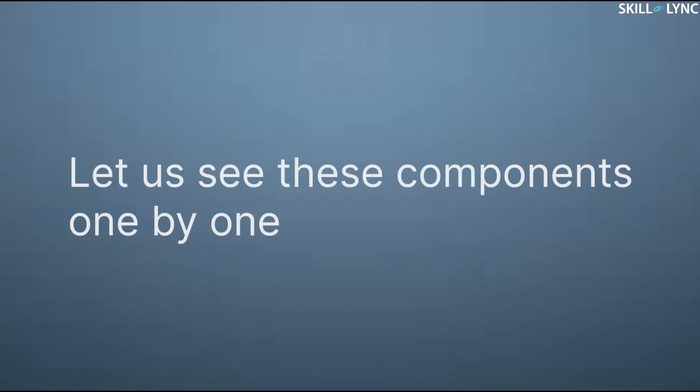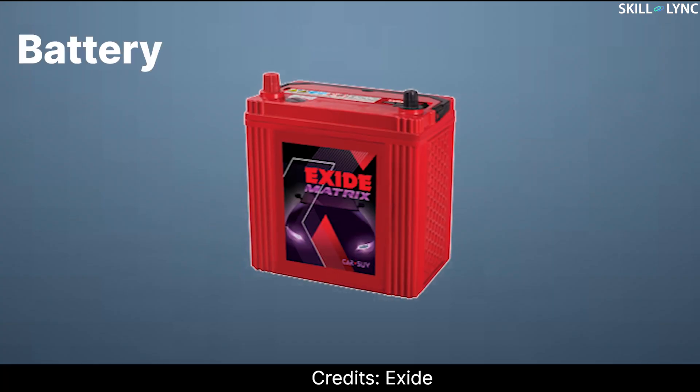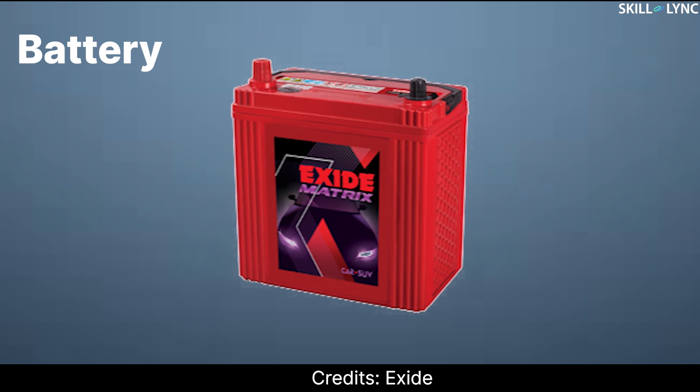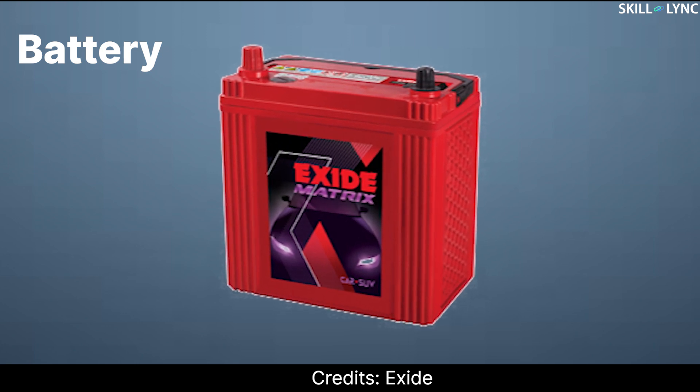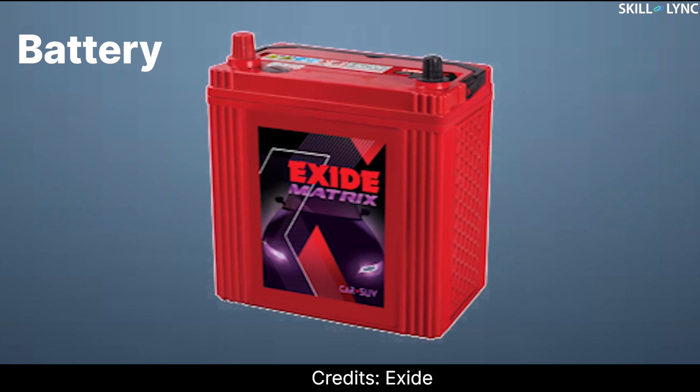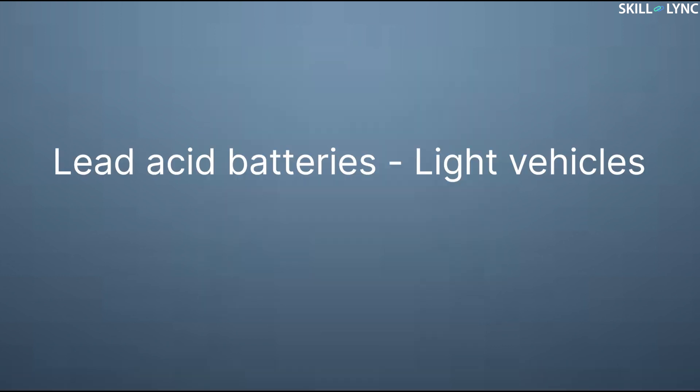Let us see these components one by one. A 6 to 12-volt battery acts as the energy source of the ignition system and it is charged by a dynamo driven by the engine. Lead acid batteries are used in light vehicles, whereas alkaline batteries are used in heavy vehicles.